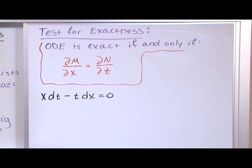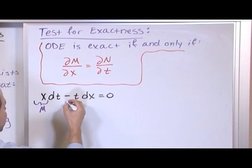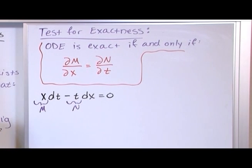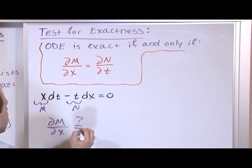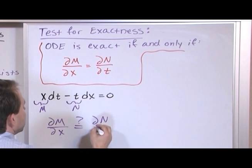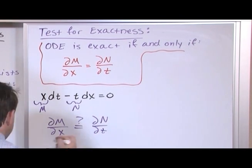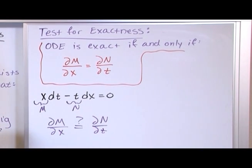Alright so the first thing you need to do is we want to identify that it's of the proper form. Now everything in front of the dt is going to be m and everything in front of the dx is going to be n. So what we're really trying to test to see if this is exact is: is the partial derivative of m with respect to x equal to the partial derivative of n with respect to t?